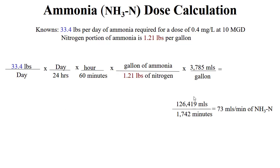Similar to earlier calculations, everything is the same except we have 33.4 pounds per day in the numerator and 1.21 pounds per gallon in the denominator. We cancel pounds, days, hours, and gallons, and we are left with mL per minute. 33.4 × 3785 in the numerator is 126,419; 24 × 60 × 1.21 is 1,742 in the denominator. We calculate 73 mL per minute of ammonia as nitrogen to feed 0.4 mg/L of ammonia as nitrogen at a plant operating at 10 MGD.